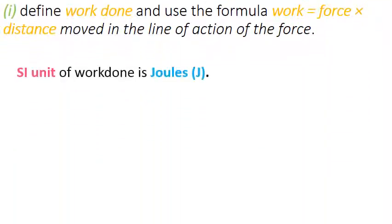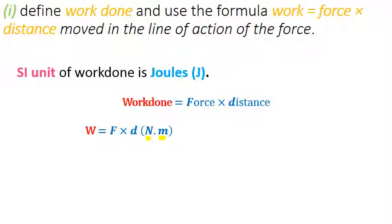Now the SI unit of work done is Joules. You must be thinking, wait a minute, Joules is the unit of energy. Yes, we will look into it in a couple of minutes. Work done equals force times distance. The SI unit of force is Newtons and for distance it's meters. Together, Newton times meter gives us Joules, represented by capital J.